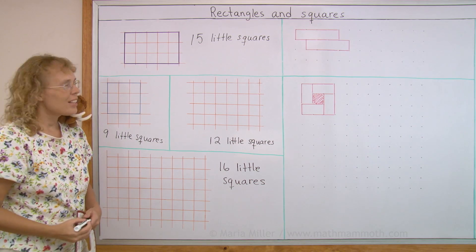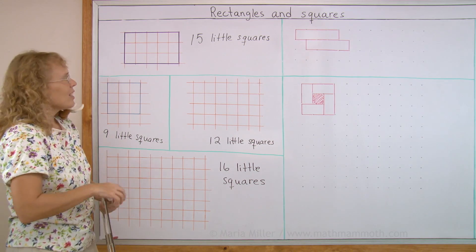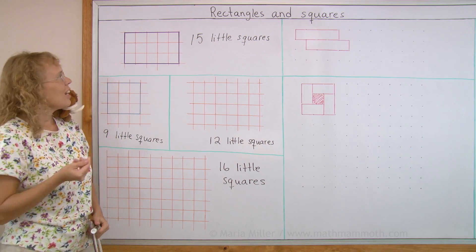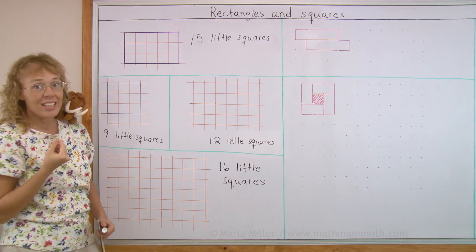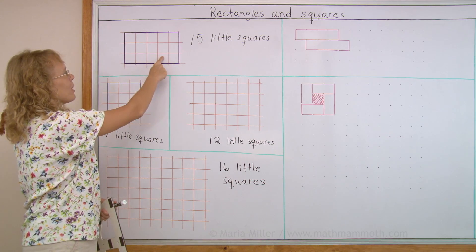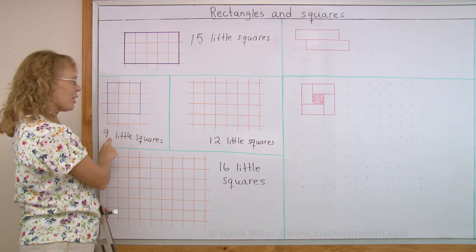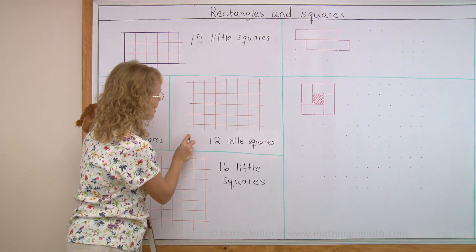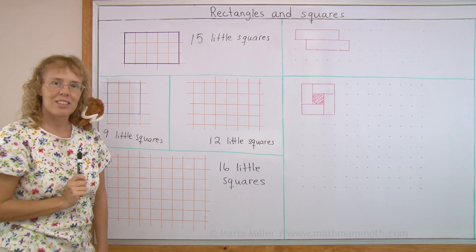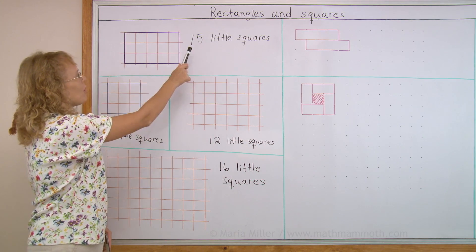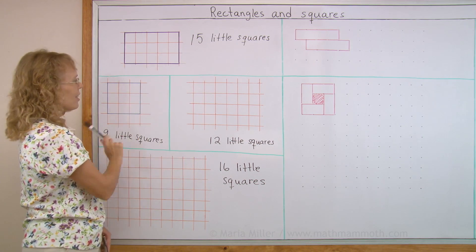So you see that these little squares give us a means to measure or tell how big a rectangle or square is. Obviously this is bigger, right? Because it had 15 little squares inside and this one had only 9. And now here I'm going to draw one that has 12 little squares inside. So that's going to be a little smaller than this one but bigger than this one, okay?